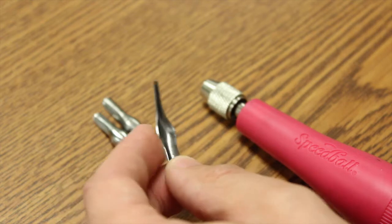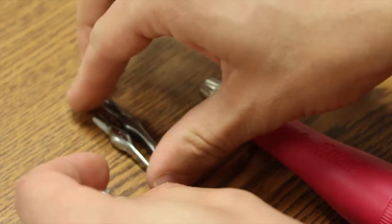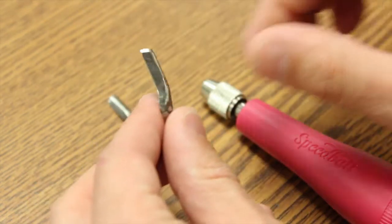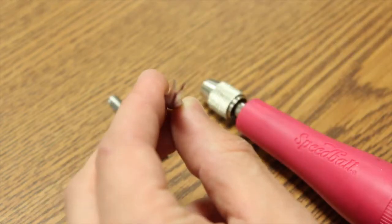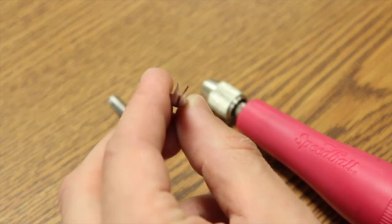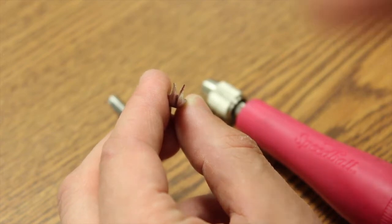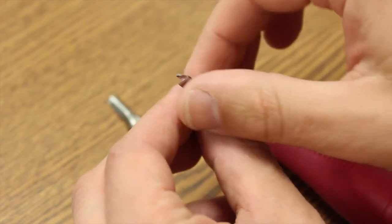It's going to make small, thin lines. And then we have a number two, it looks more like a V in the front. And that's going to be making a little bit of a wider line.